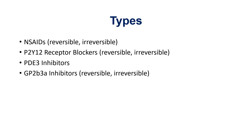These are the types of antiplatelet drugs. There's NSAIDs, which act on the cyclooxygenase section of the arachidonic acid pathway, and there's reversible and irreversible types within that. There's P2Y12 receptor blockers, also with reversible and irreversible types. There are PDE3 inhibitors — phosphodiesterase 3 inhibitors. And then GP2B3A, or glycoprotein 2B3A, which is involved with platelet aggregation via cross-linking with fibrinogen. There are GP2B3A inhibitors with reversible and irreversible types as well.